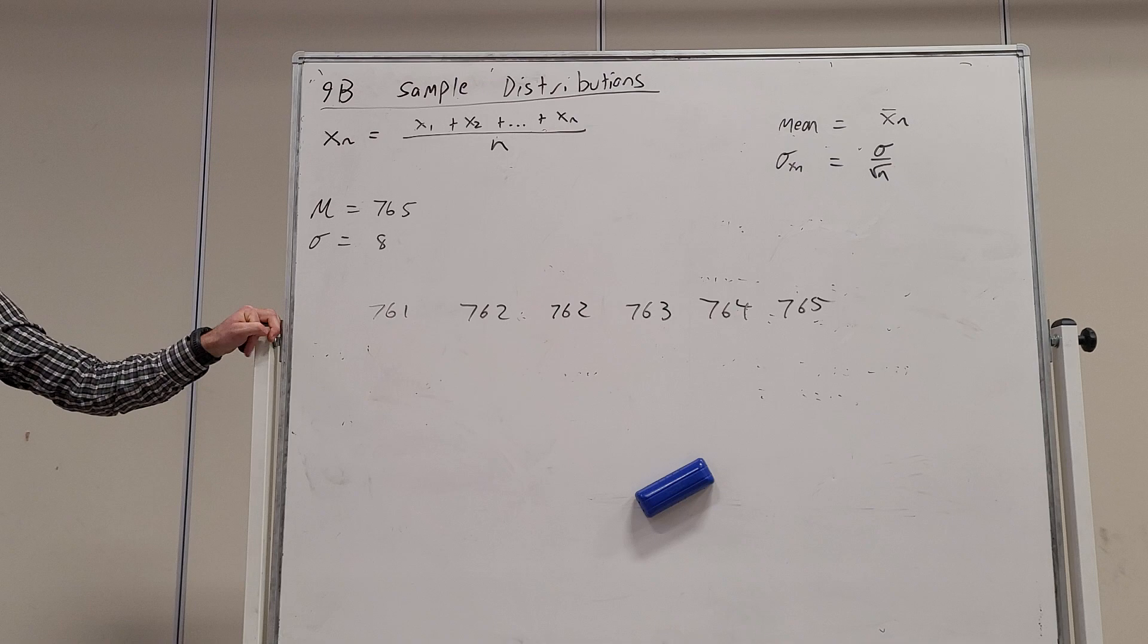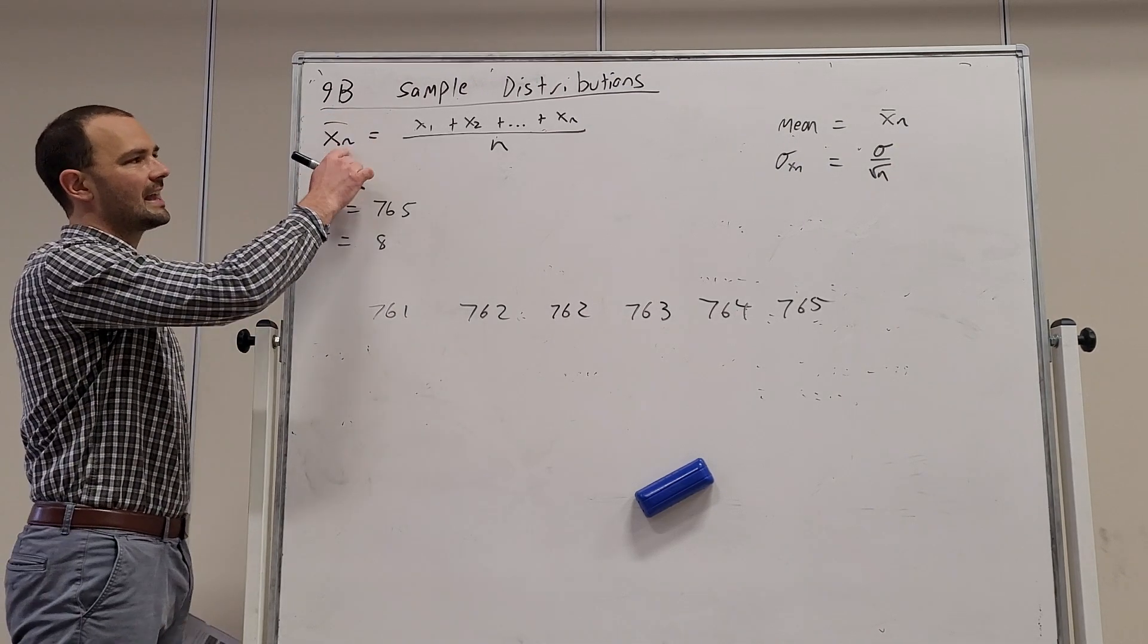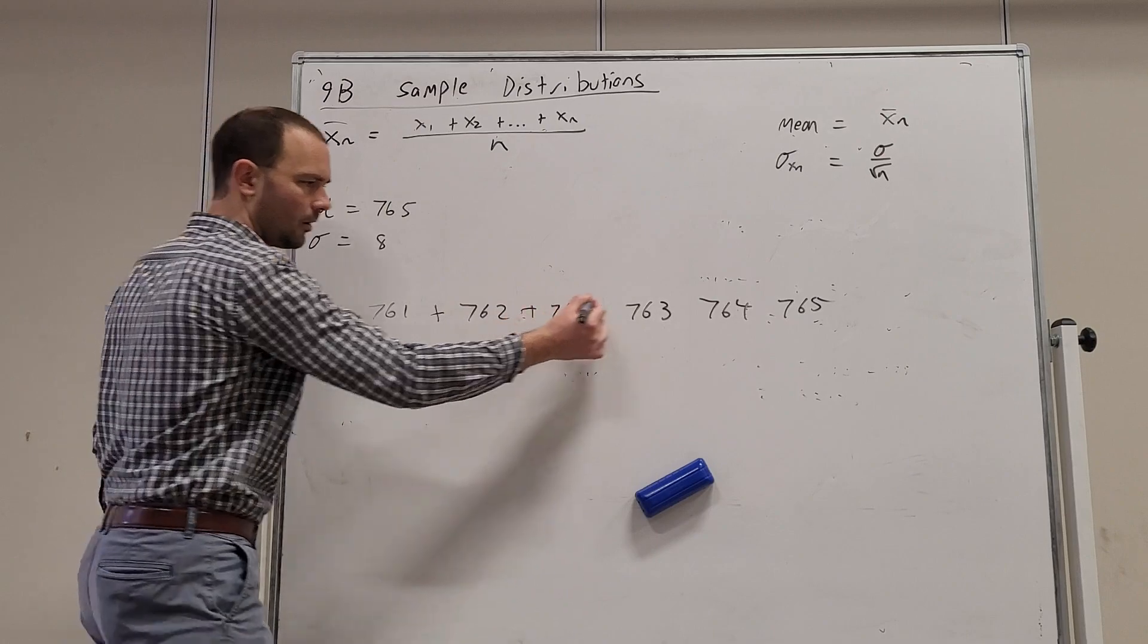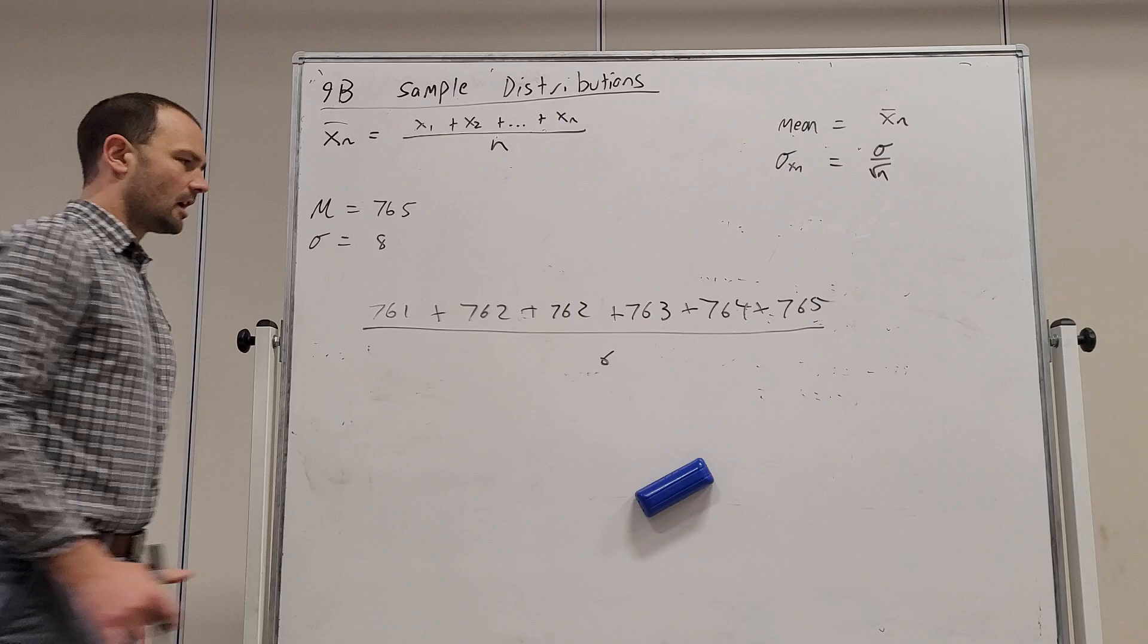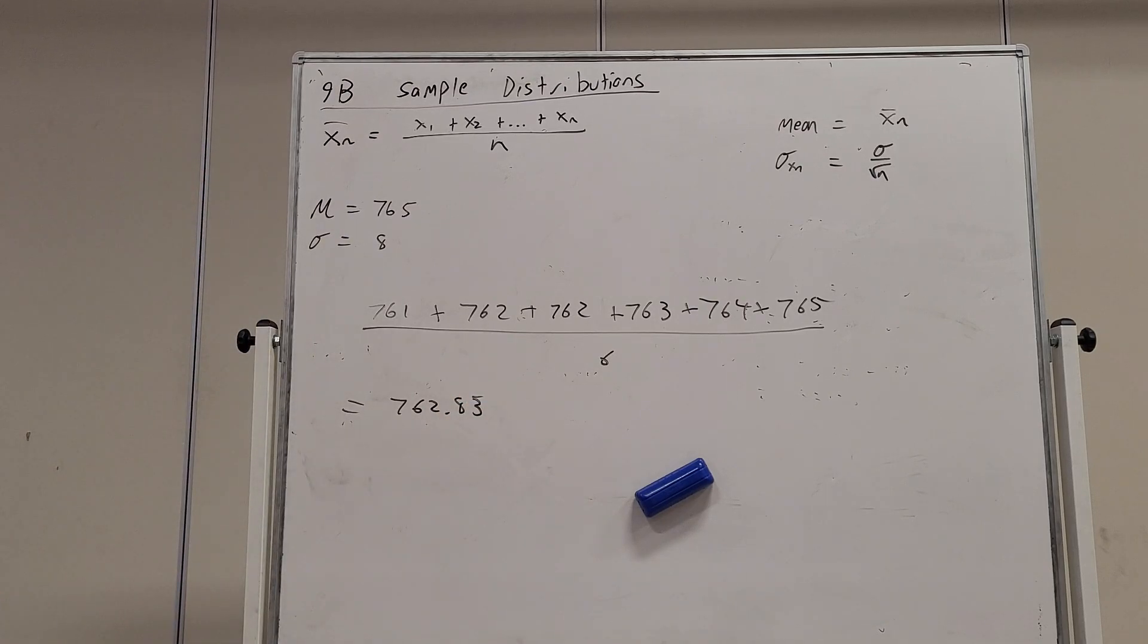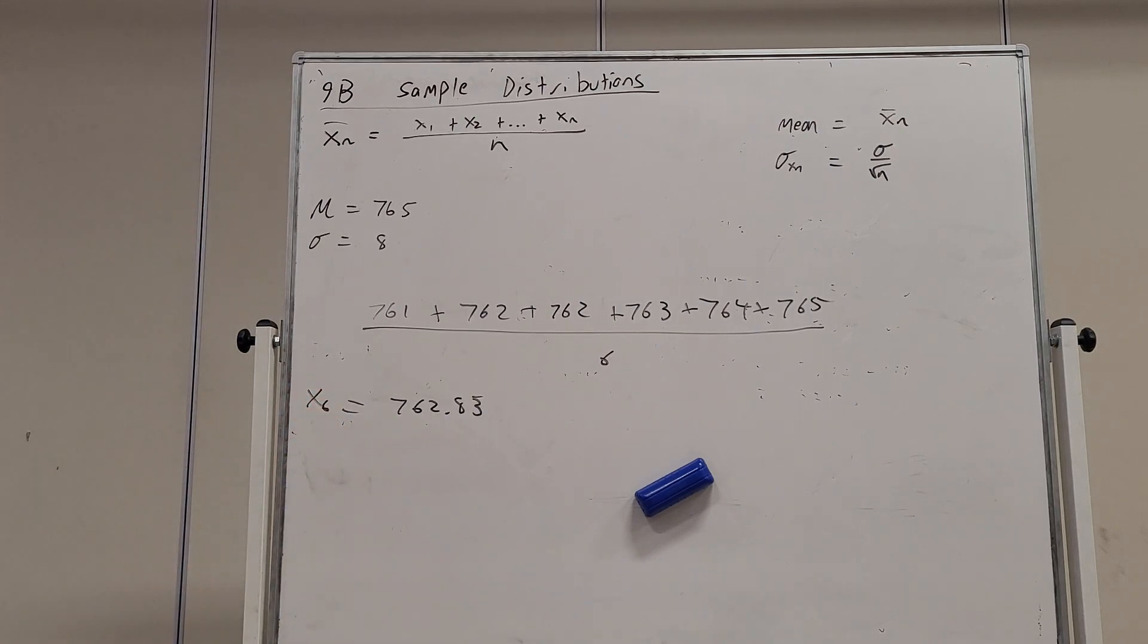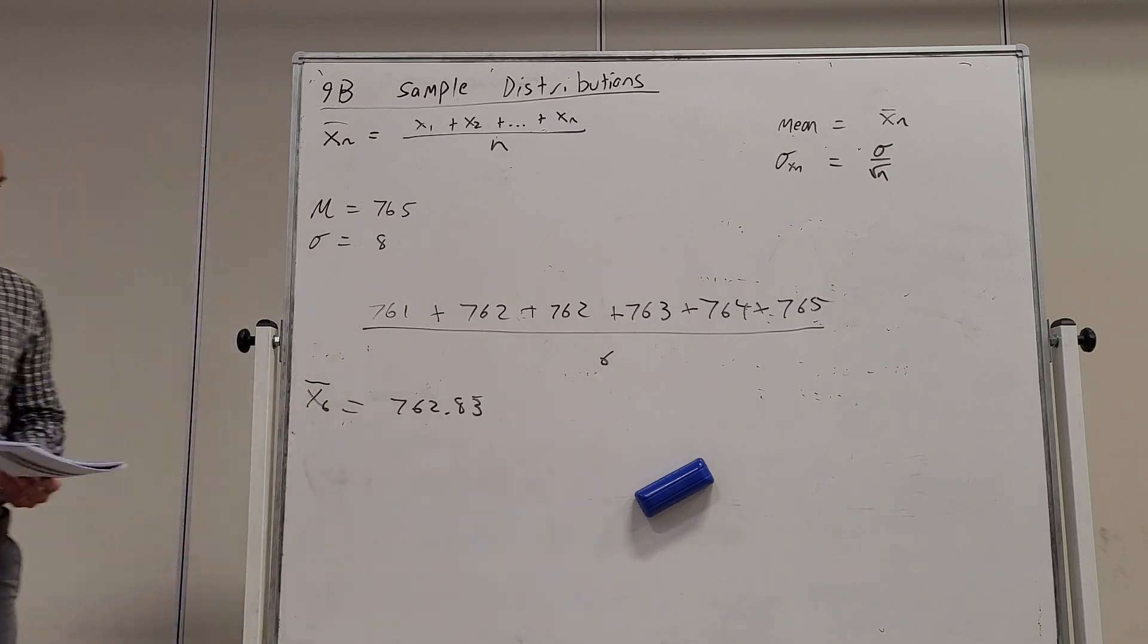Part A is find the observed value of x6. So we've got xn is the sum of n observations divided by n. Here we've got x6 is going to be the sum of six observations divided by six. So I'll just do that really quickly in my head. And 762.83, we're carrying. So that's our observed value of x6. Based off our observations, the mean is 762.83.